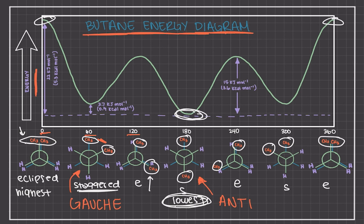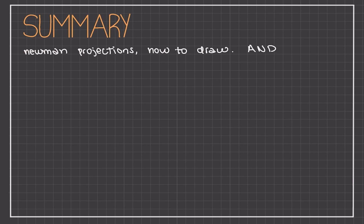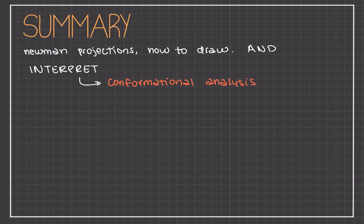That covers the full conformational analysis of butane, and this is essentially all the terminology you need to know for Newman projections. In this video we started with dihedral angles, discussed Newman projections and how to visualize, draw, and interpret them, and learned about conformational analysis — the investigation of the different molecular conformations of a molecule and their different relative energies. Scientists perform this analysis when setting up experiments and mechanisms to see how reactions will take place or how much energy they need to put into a reaction to get molecules to a desired conformation.